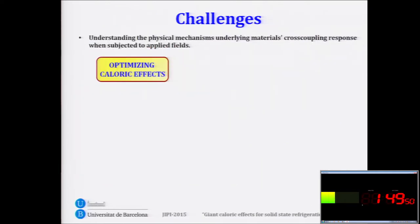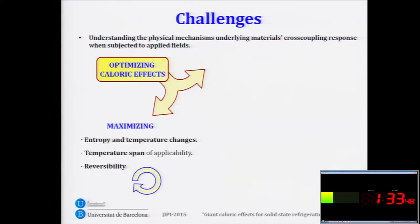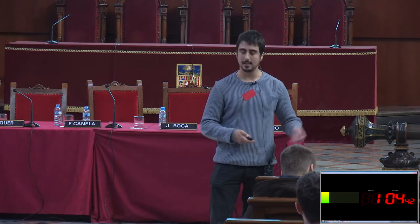Our aims as physicists are understanding the physical mechanisms driving these kinds of first-order transitions, and optimizing these giant caloric effects. This means maximizing entropy and temperature changes in these materials, maximizing the temperature span of applicability so that it fits our range of interest, and ensuring the reversibility of the effect so that the phenomena do not change when cycling — since the thermodynamic cycle consists of continuously cycling the material.